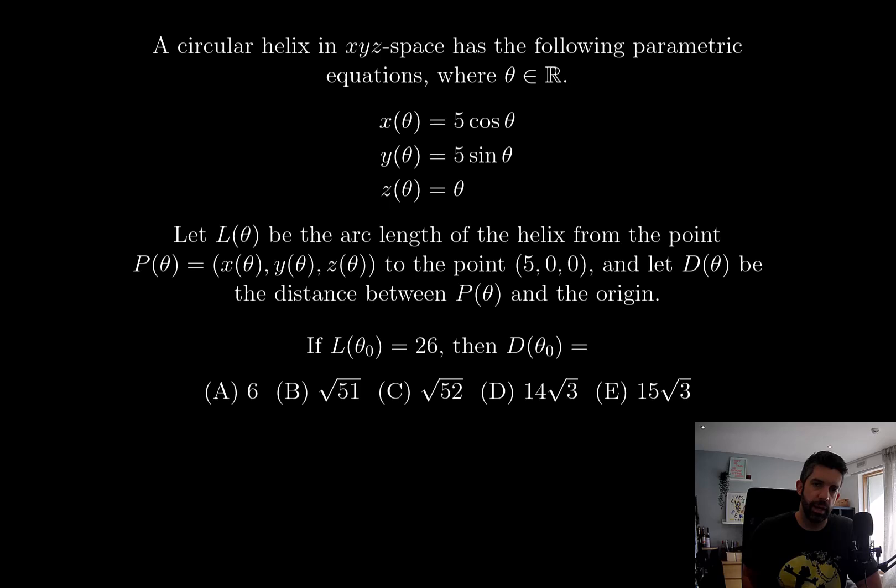A circular helix in x, y, z space has the following parametric equations where theta is a real number. We're given the coordinates of x, y, and z in terms of theta, pretty much what you would expect for this helix.